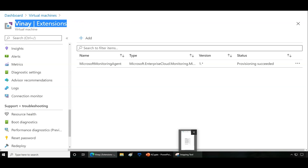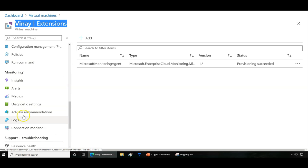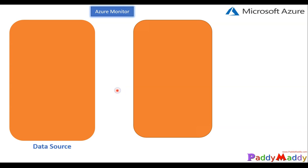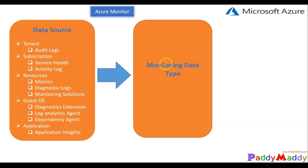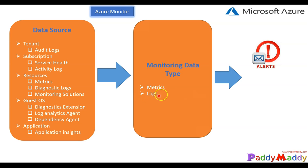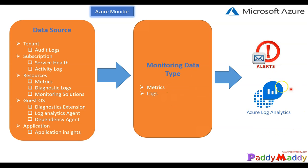We will jump back to the PowerPoint and understand more about this as an overview. We are not driving into full demos at this point because it is just the overview section. Post this, we will jump into every possible option for monitoring and deep dive into each. To summarize so far: we talked about data sources, different metrics, and logs as two categories of data type. Post this, we will configure alerts based on those metrics and logs, or process the information to Azure Log Analytics to run queries and visualize data.